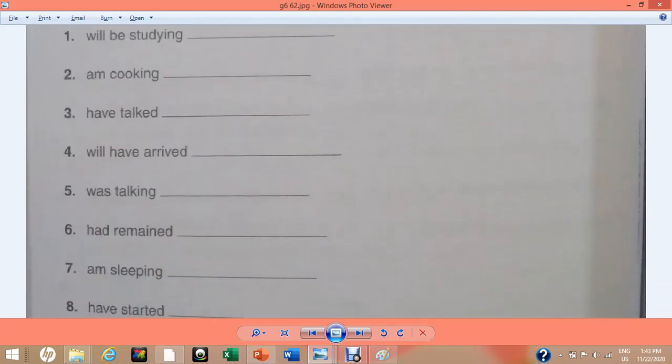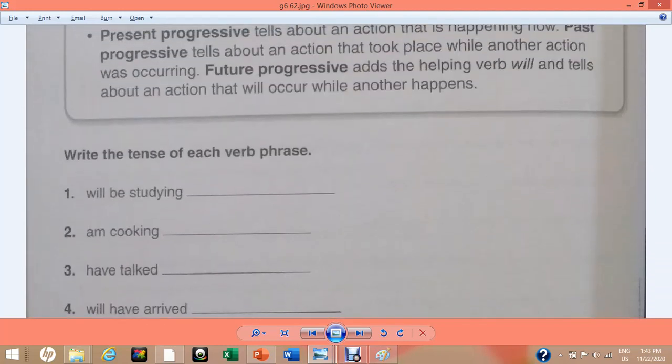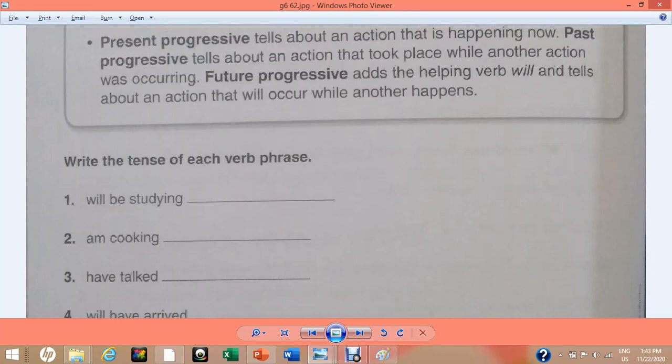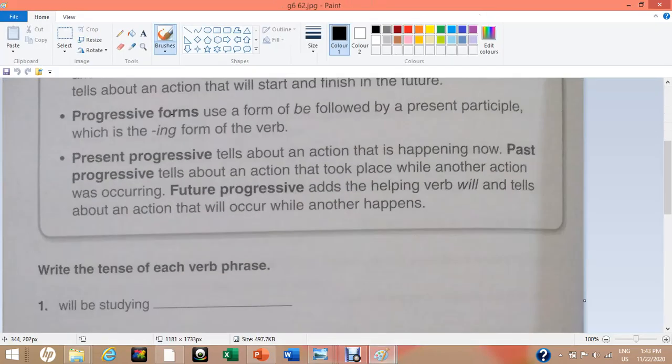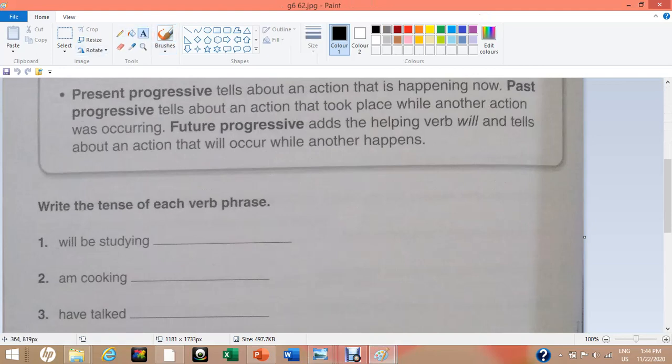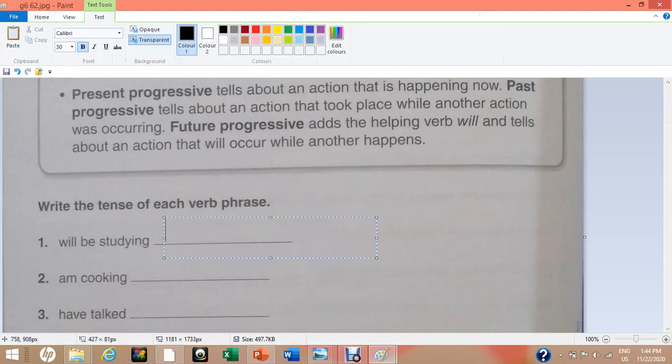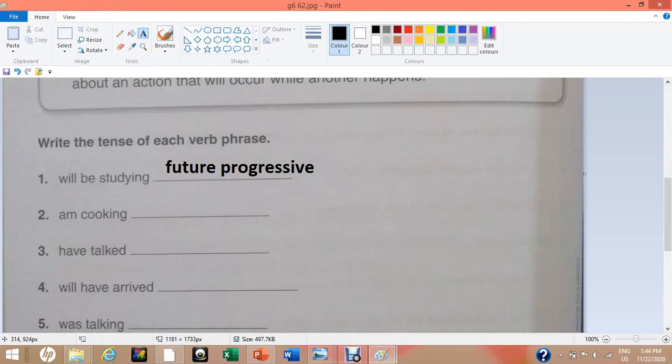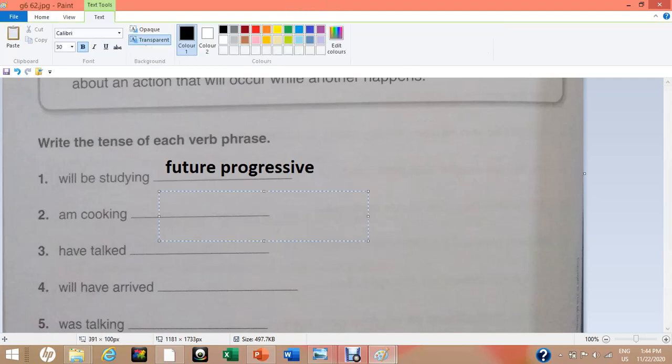In page number 62 we have 10 phrases rather than verb phrases. We are going to find out their respective tenses. Number one verb phrase is will be studying and it belongs to future progressive tense. Number two, am cooking. This verb phrase will be included in the tense of present progressive.